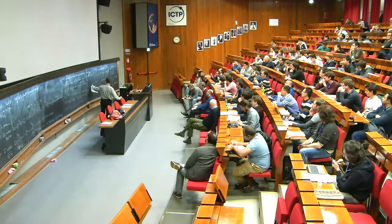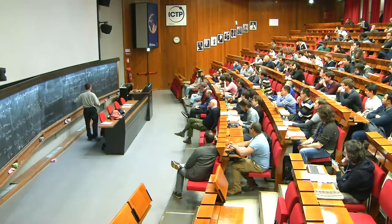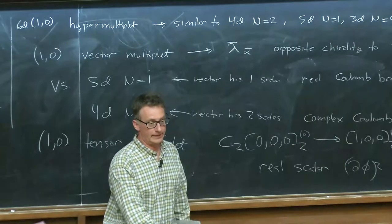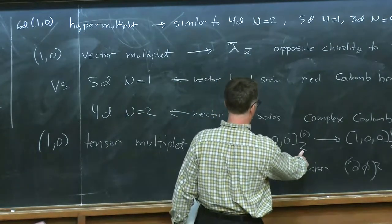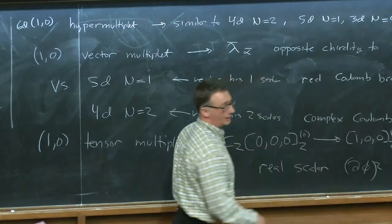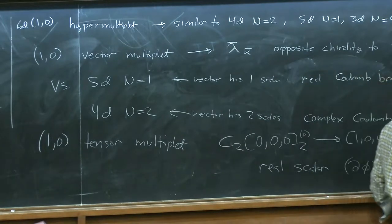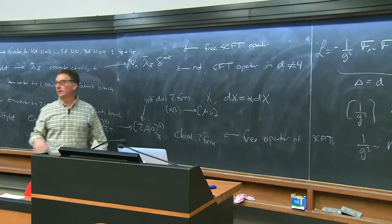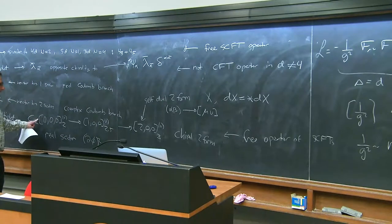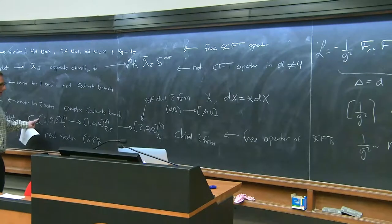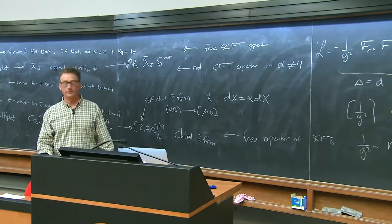Regarding the question about why self-duality arises: this is just an example of a multiplet we can have in six dimensions. If the bottom component is a Lorentz scalar of dimension 2 and we apply the supercharges, the group theory tells us we symmetrize in spinor indices, and we happen to get a self-dual two-form at the top. It comes purely from the group theory of how supercharges act.